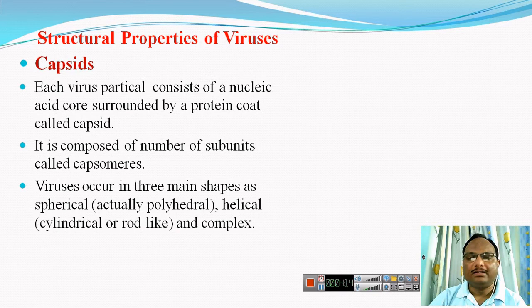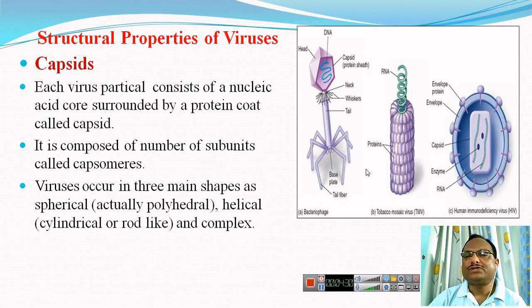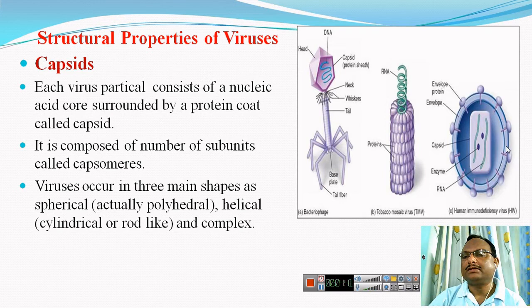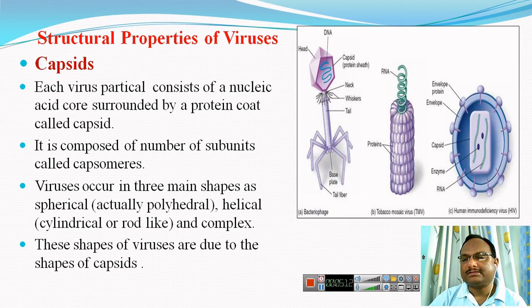The three different shapes of viruses are spherical, rod-shaped, and complex. In this picture, these are three representative viruses: the first is human immunodeficiency virus (HIV), an example of the spherical virus; the second is tobacco mosaic virus, an example of the rod-shaped virus; and the third is T4 bacteriophage, an example of a complex virus. The shape of viruses is totally dependent on the structure or shape of the capsid.